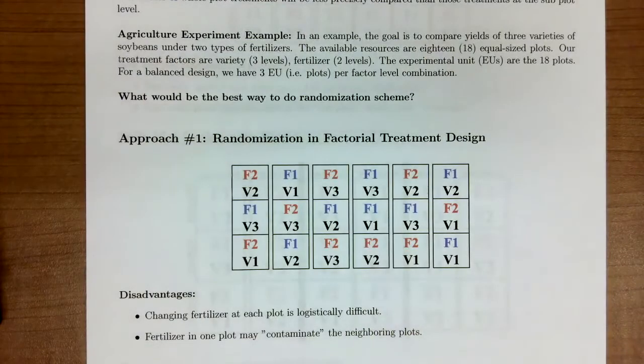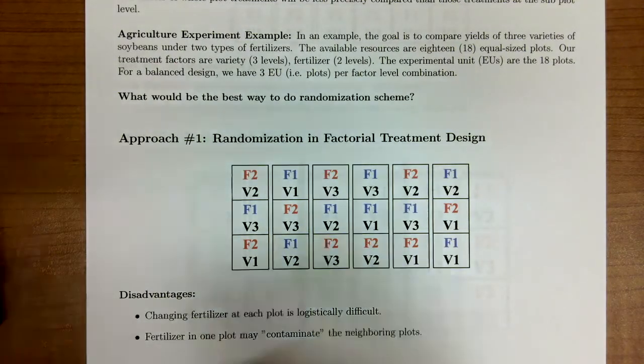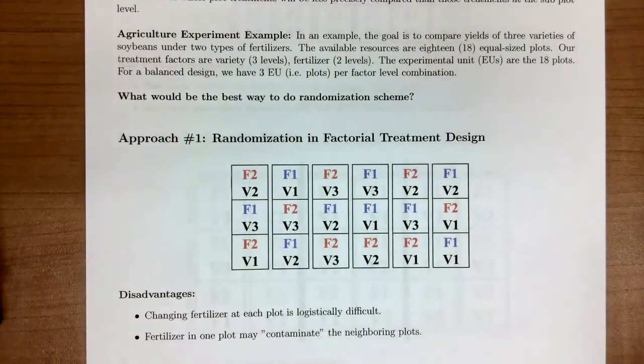Let's get into another example where we'll talk about different ways to randomize in context of our agriculture experiment. The goal of our agricultural experiment is to compare the yield of three varieties of soybeans under two types of fertilizers. In this case, we have fixed effects, we're only looking at three soybeans and two fertilizers. The available resources are 18 equally sized plots. Our treatment factors are the variety and the fertilizer. The experimental units are the 18 plots. For a balanced design, we're going to have three EUs per factor combination. What would be the best way to do the randomization scheme?